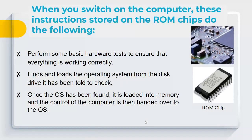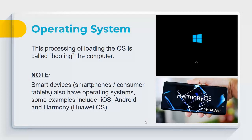When switched on, the ROM instructions first perform a basic hardware test. In the past this was visible; nowadays it happens so fast you don't notice. If all tests pass, the operating system is found and loaded into memory, and control is handed over to it. If not, you'll get a screen with instructions. This process is called booting. Starting from scratch is a cold boot; restarting a computer already in use is a warm boot.